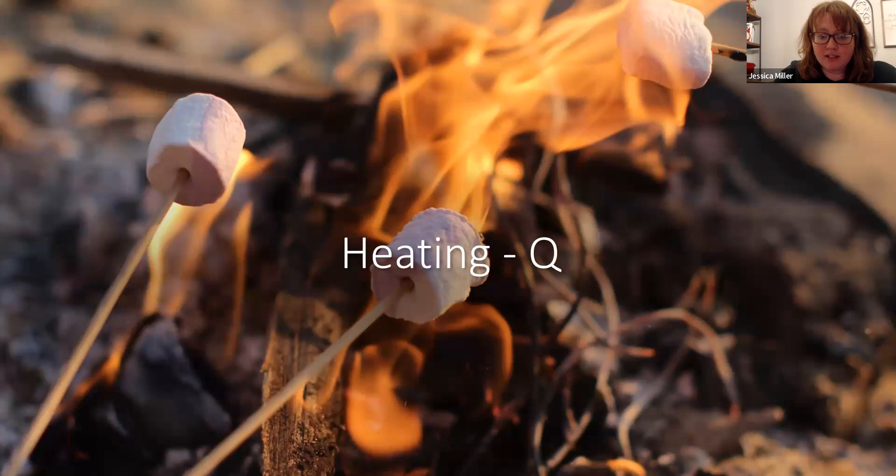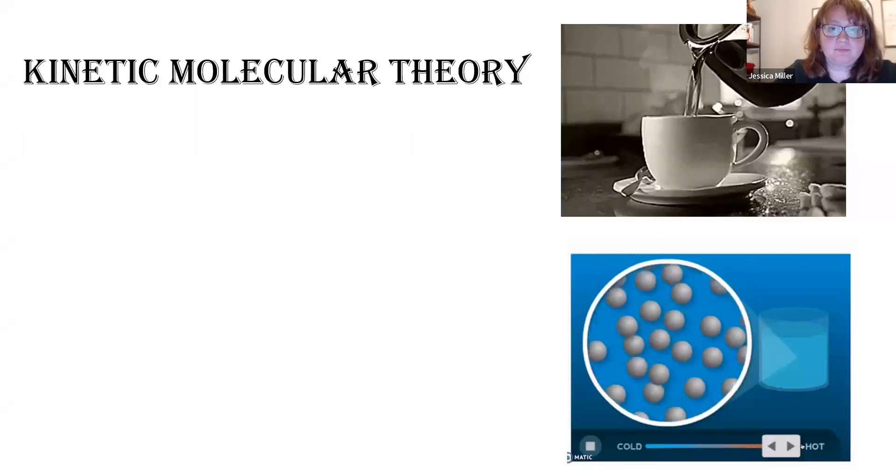All right. So there are three main processes for transferring energy: working, radiating, and heating. Working energy or that process will be covered in physics. Radiation energy might be covered in chemistry or maybe another type of earth science or physical science. Energy from the sun is an example of radiation. And then in chemistry, we focus on the energy process of heating, and heat is represented with a Q. That's when energy is entering or leaving a system through a phase change or a temperature change.